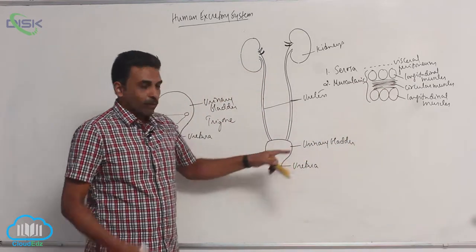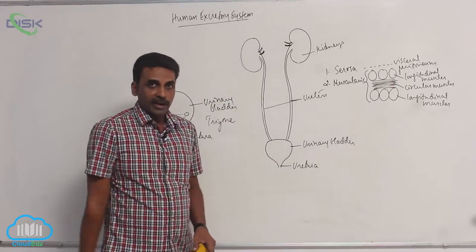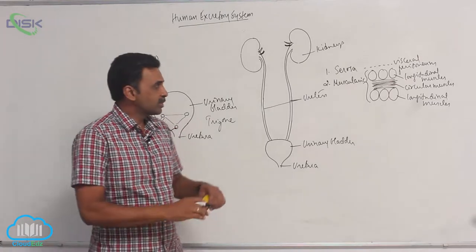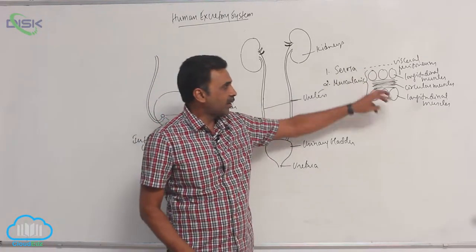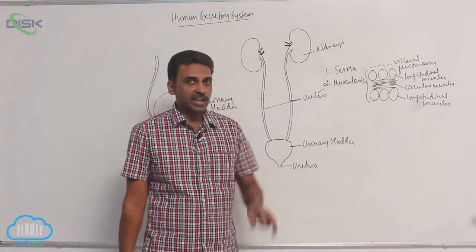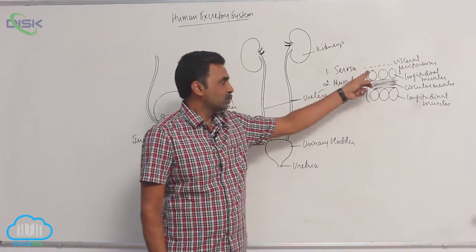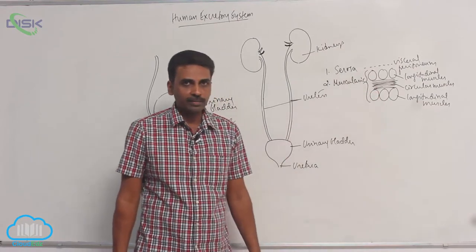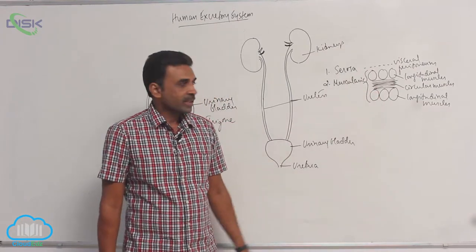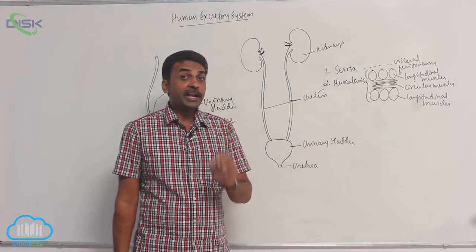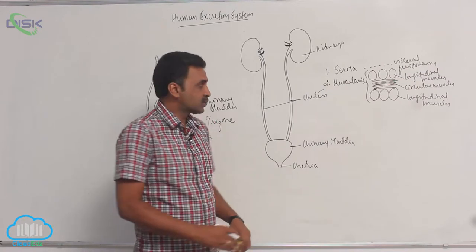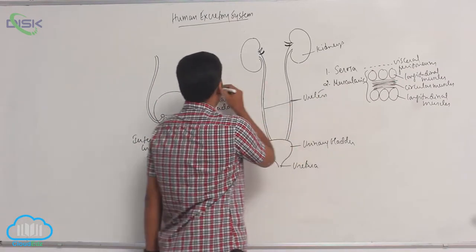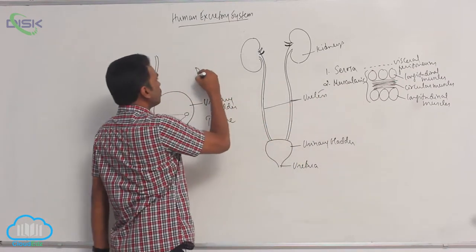In the wall of the urinary bladder there are smooth muscles. These smooth muscles are arranged in three layers: longitudinal, circular, and longitudinal. These muscles are also called detrusor muscles.